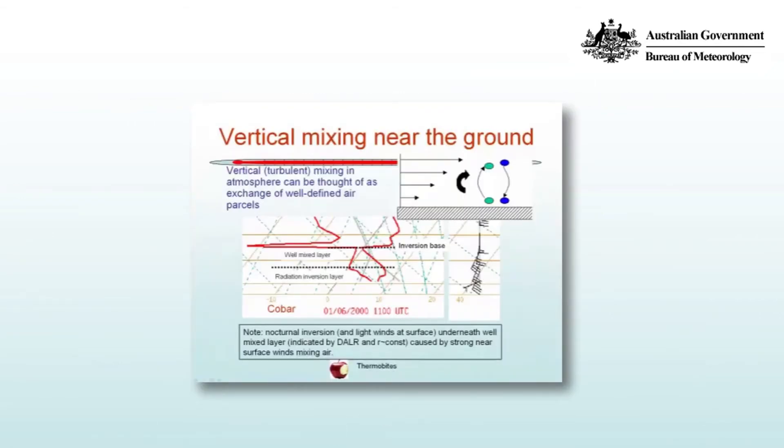Vertical mixing near the ground. Vertical or turbulent mixing in the atmosphere can be thought of as the exchange of well-defined air parcels. We're going to assume that parcels will mix in the vertical, conserving their value of mixing ratio and do so dry adiabatically so their value of potential temperature does not change.